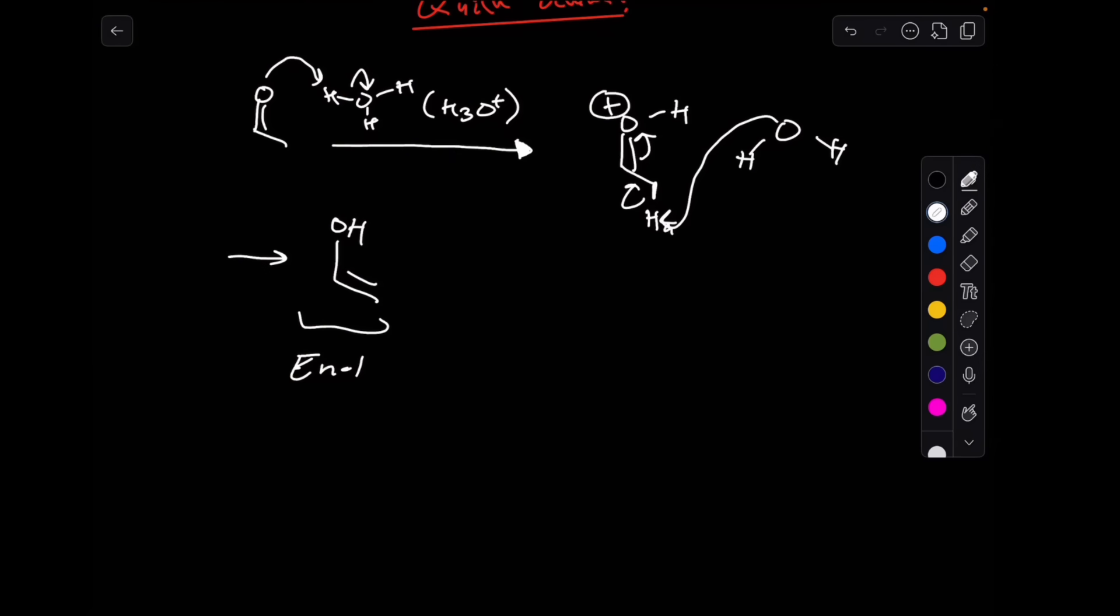Assuming we have another aldehyde, which we do, we can attack this. But before we attack, we have to protonate this oxygen right here and we can do so with another hydronium. The reason you have to protonate it is because since enol is a much weaker nucleophile than enolate...